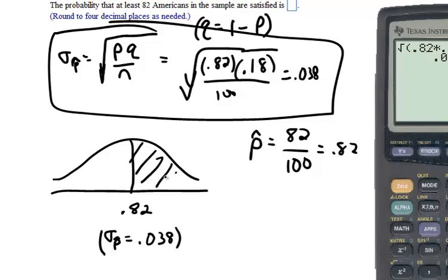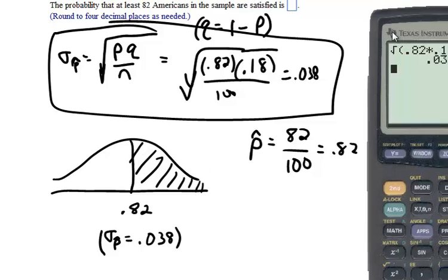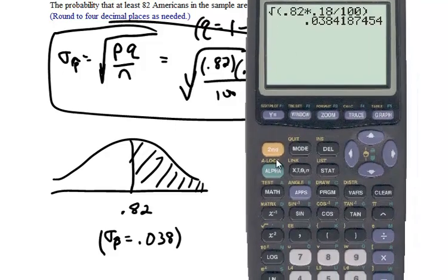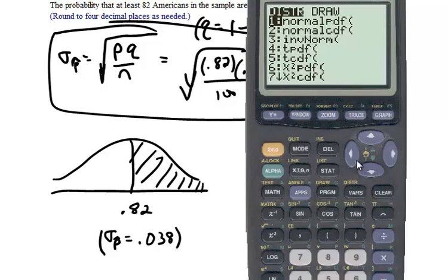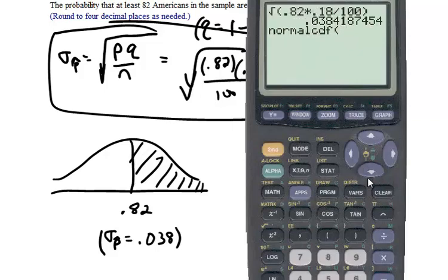We're actually trying to find this part right here. And we don't even really need to compute this out. This is going to be one half. But just to show you what we would normally do, we're going to do a normal cdf. Normal cdf of left bound 0.82, right bound is 1e99. The mean proportion is 0.82, standard deviation is 0.038. And we get 0.5.